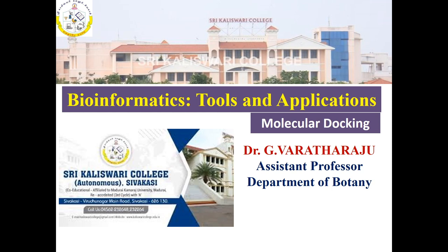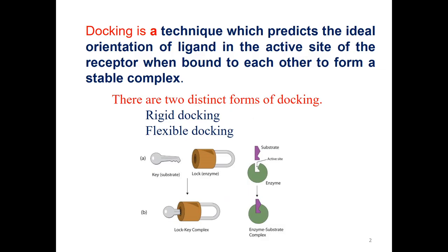There are different fields available in bioinformatics. In this video we have discussed about biological databases and their application. Now we will discuss about molecular docking. Docking is a technique which predicts the ideal orientation of a ligand in the active site of the receptor when bound to each other to form a stable complex. So when the receptor and the ligand bind together, they form a stable complex, and only then is the docking performed well and we get significant results. When performing docking, we must take care of the interaction of receptor and ligand.